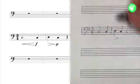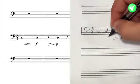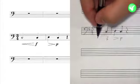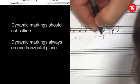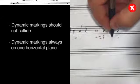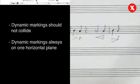Dynamic markings should always be on one horizontal plane for each system. By default, dynamics are notated below the staff. The crescendo should not touch the forte, and not only does the decrescendo collide with the piano marking, but also it's marked too low.